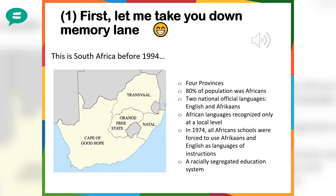In South Africa before 1994, everything was racially segregated. You had different schools for different races and people from different cultures. As a country we only had four provinces, and within these provinces you would generally have a native administration that took care of indigenous or native peoples' affairs. We only had two national official languages — English and Afrikaans — even though about 80% of the population were native Africans, meaning those two official languages catered to only roughly 20% of the population.